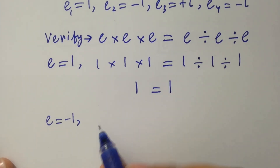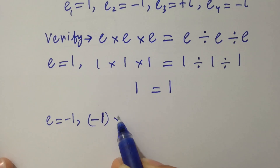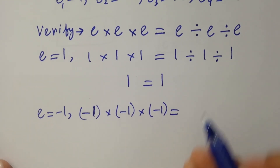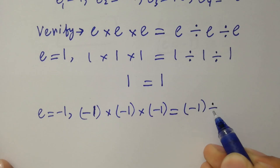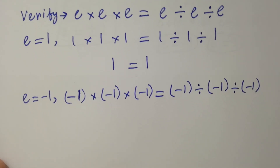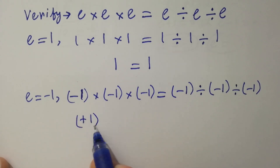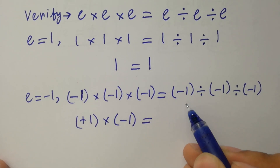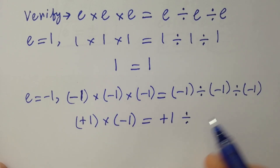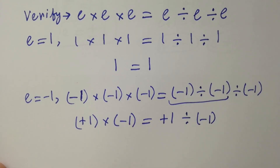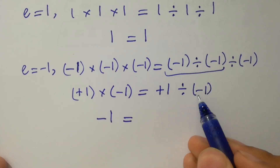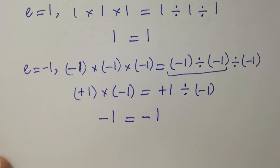Next, take e equals minus 1 and put it into the equation. We have minus 1 times minus 1 times minus 1 equals minus 1 divided by minus 1 divided by minus 1. On the left hand side, minus 1 times minus 1 is plus 1, times minus 1 gives minus 1. On the right hand side, minus 1 divided by minus 1 is 1, and 1 divided by minus 1 is minus 1. So left hand side equals right hand side.